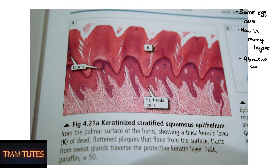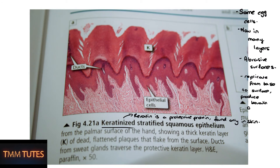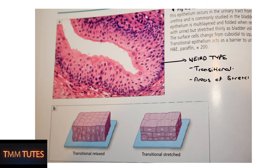This is also squamous but a more zoomed-out view. You can see the middle layer labeled 'epithelial cells' — there are many layers of these egg-shaped cells. Stratified squamous is usually found on abrasive surfaces. Keratinized just means it's on the skin, because keratin is a protective protein the cells make to protect from abrasive surfaces. Cells replicate from the base of the layers up to the top.